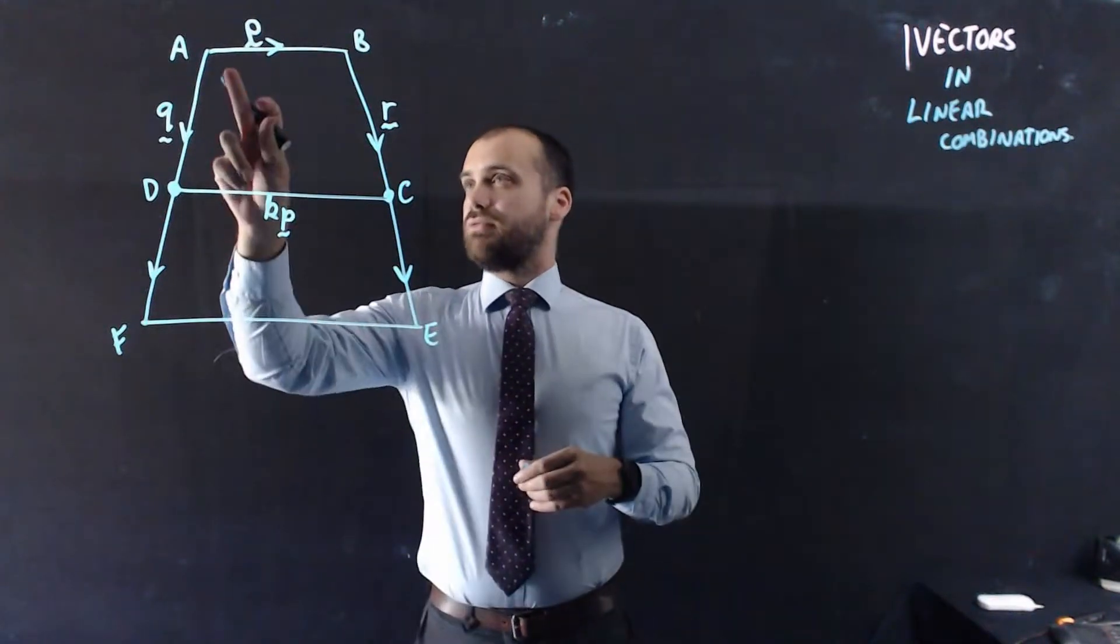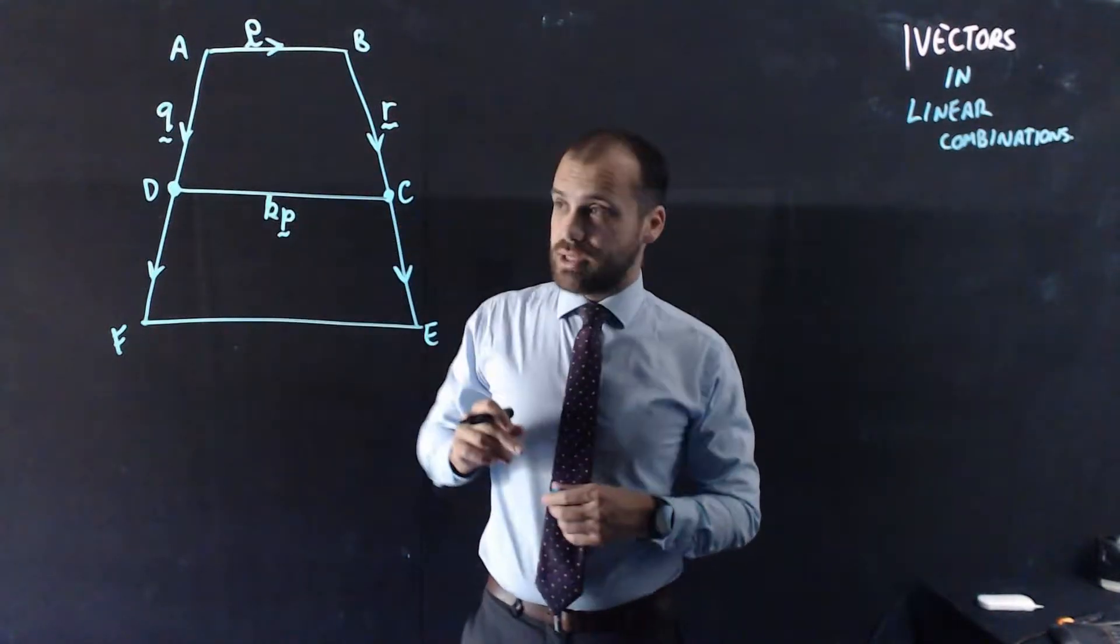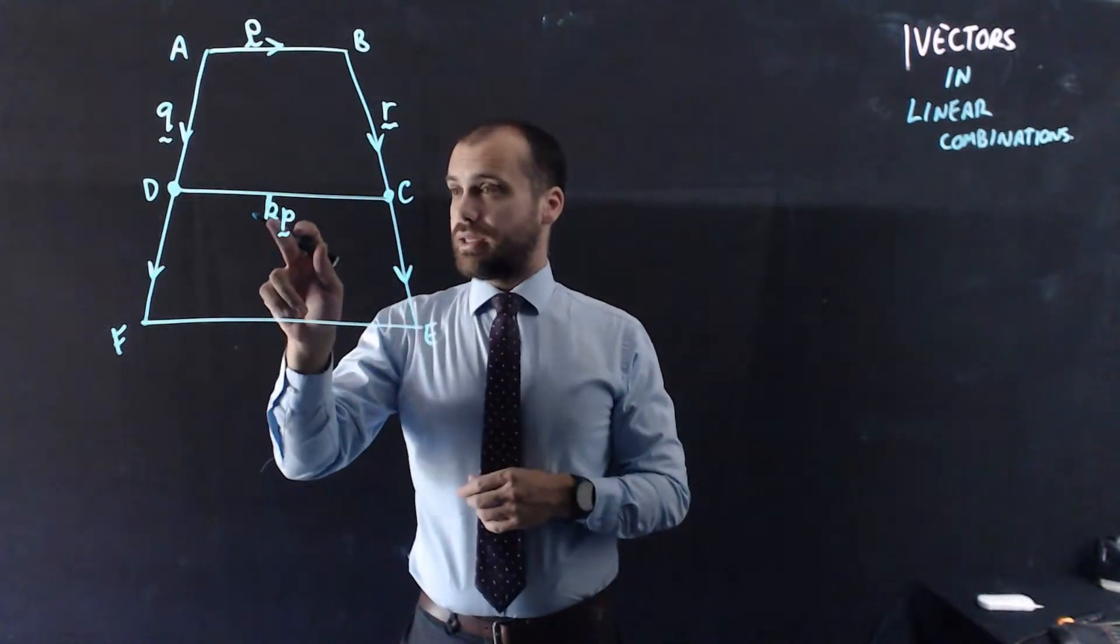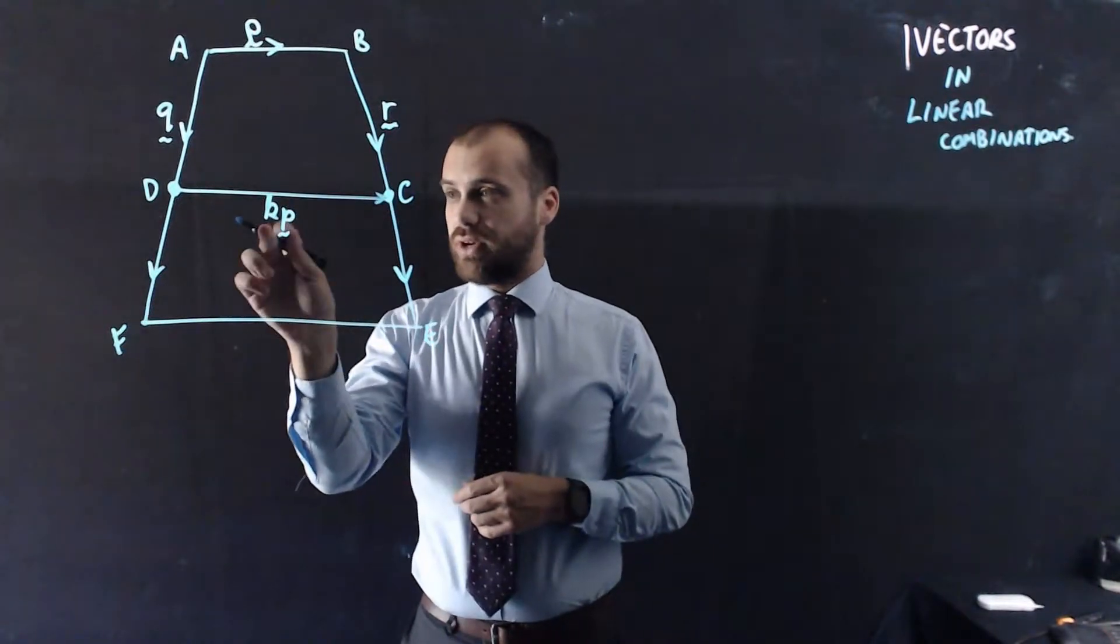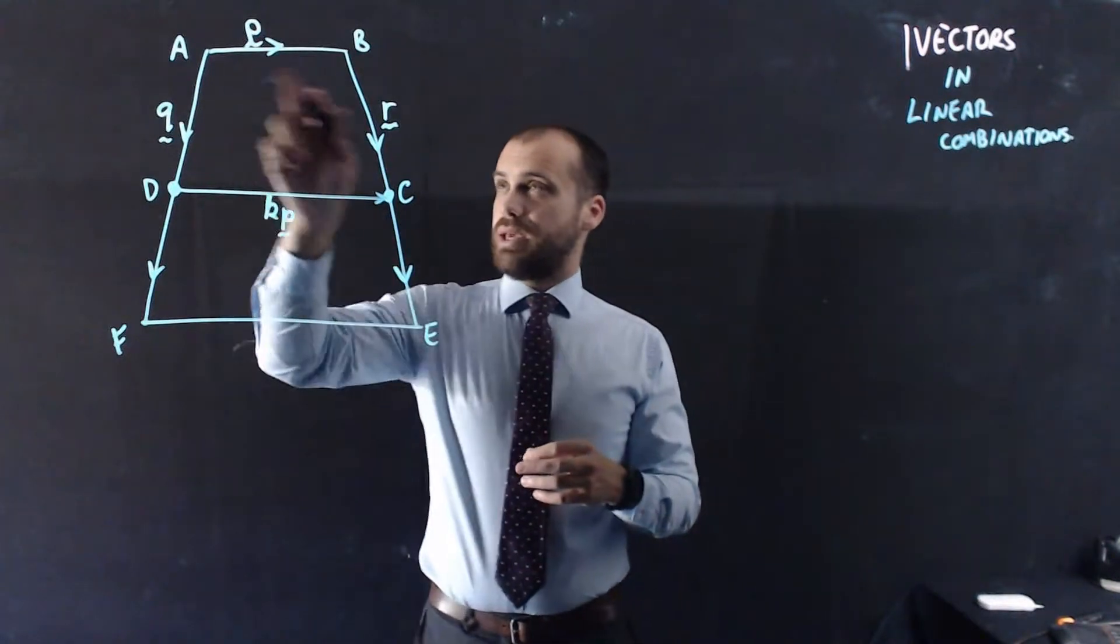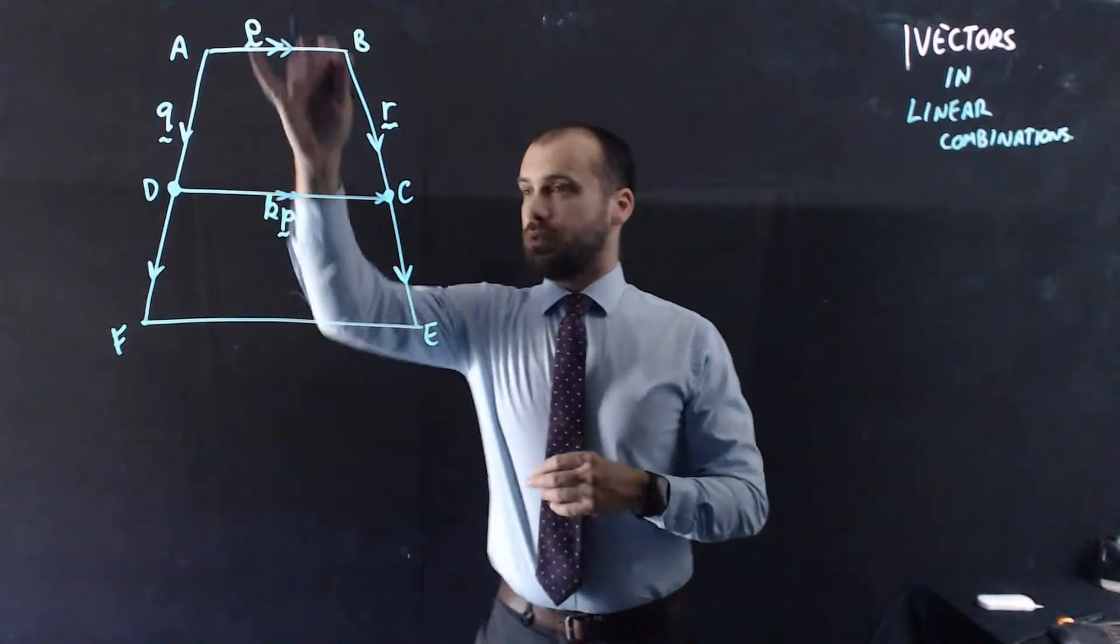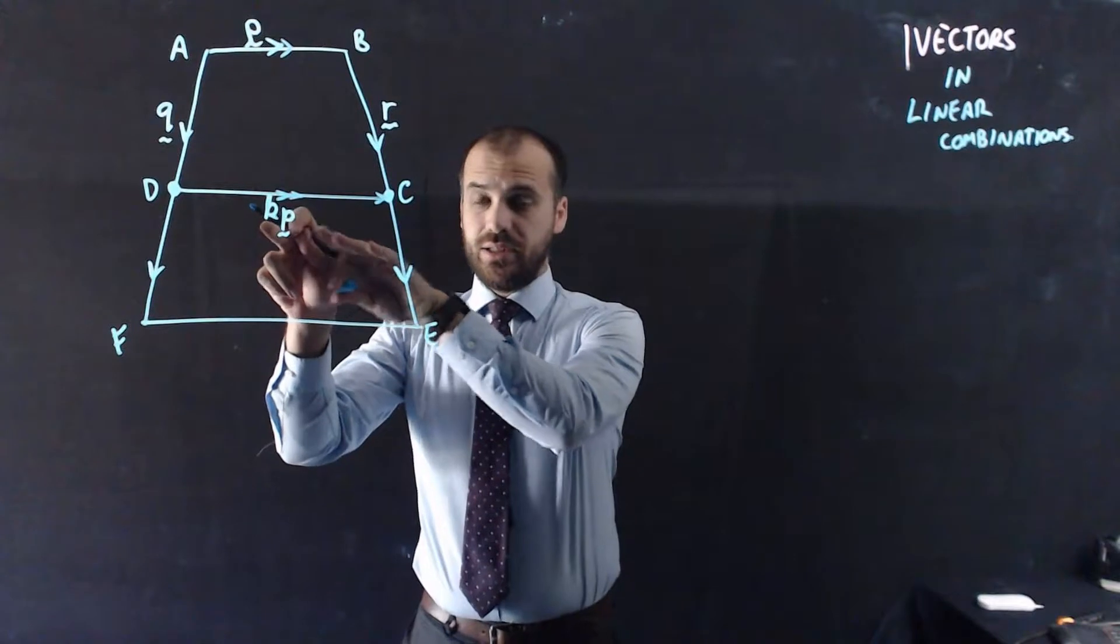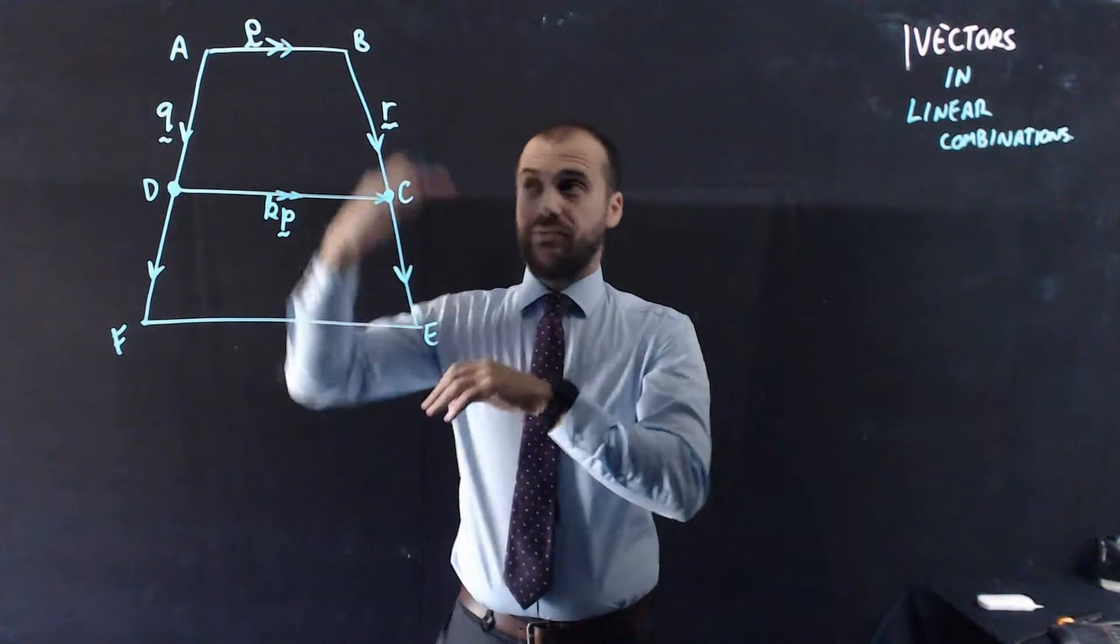Alright, so we have the vector AB represented by the letter P. Now what I'm going to tell you is that the vector DC is KP, so the vector P multiplied by some kind of scalar. Now what does that mean? That means that P and KP are parallel because they've got this scalar here, so a vector multiplied by some scalar is going to be parallel to the original vector.